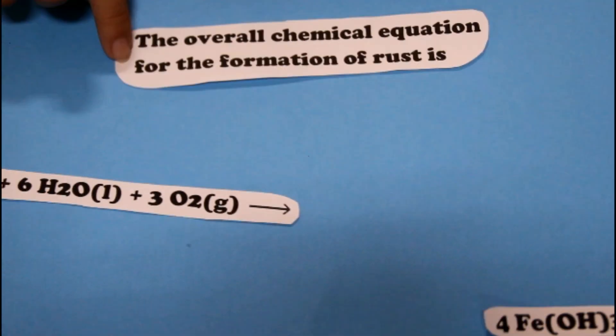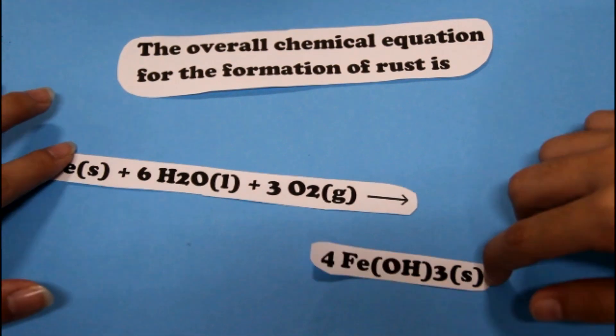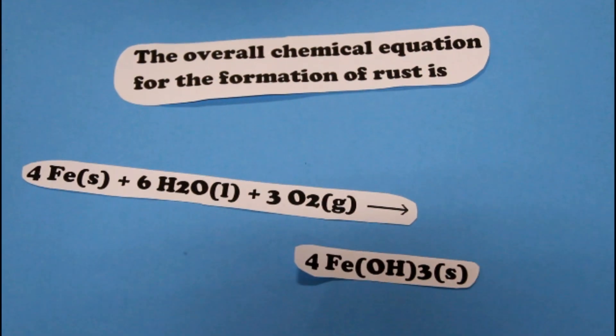So from the combination of iron, H2O, and oxygen, the overall reaction created a new substance which you all know as rust. The new equation which is 4Fe + 6H2O + 3O2 equals 4Fe(OH)3, rust.